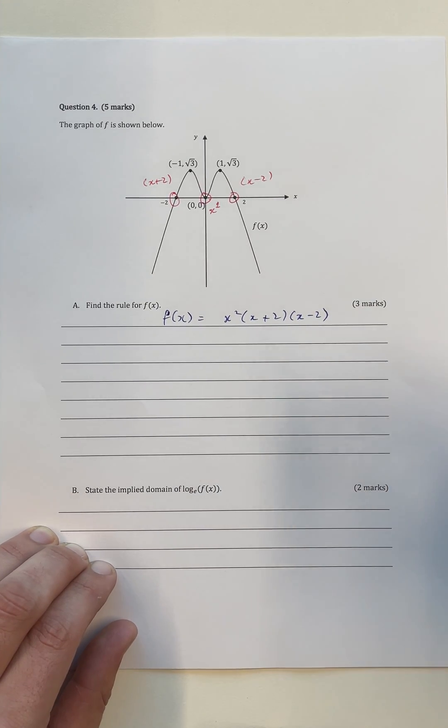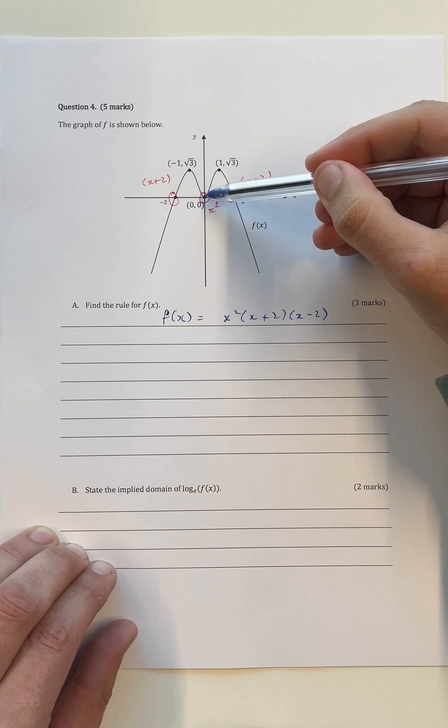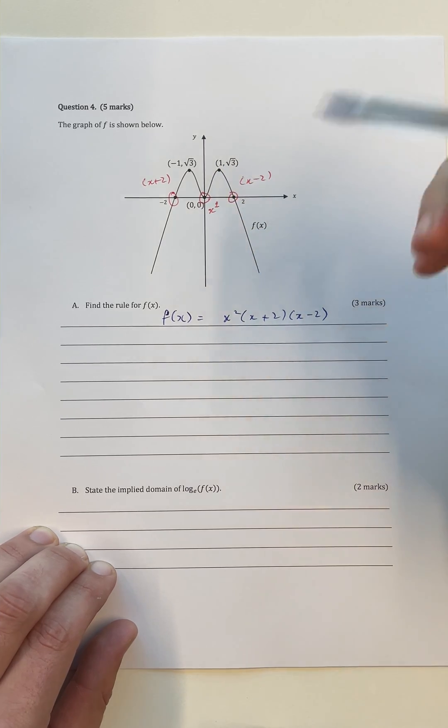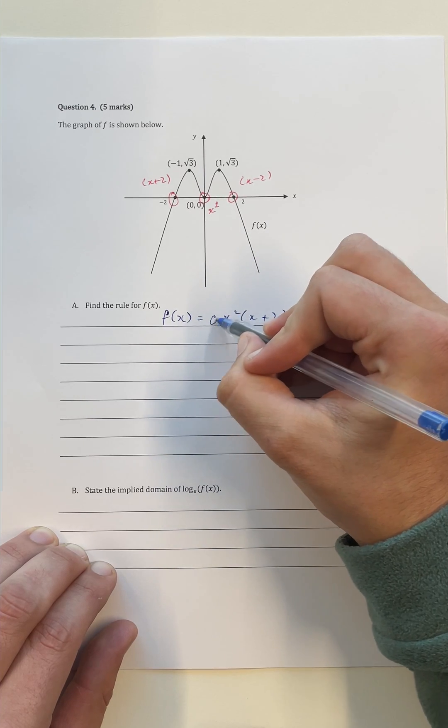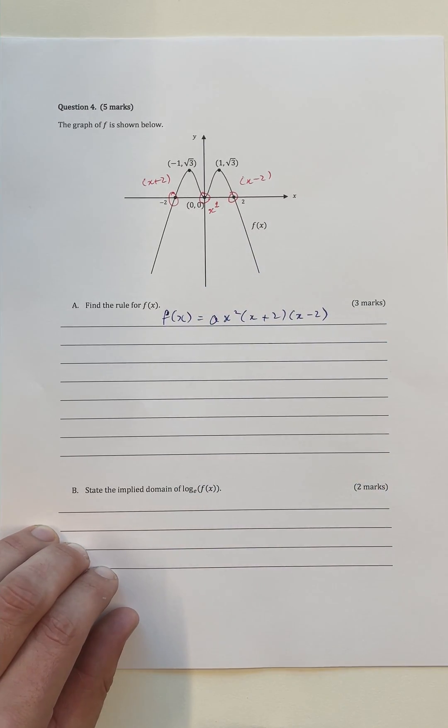Now the only thing that we're missing is some sort of information which tells us about the stretch of this equation. Another word for stretch we might know is dilation. How that's represented in this case is just a simple a on the outside of our full function.